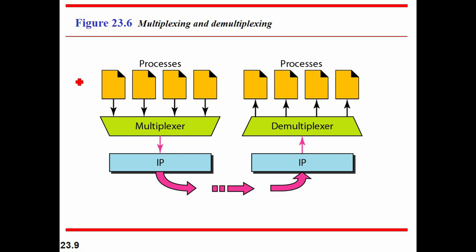Now, multiplexing and demultiplexing. Whenever you send some data, there will be some multiplexing or demultiplexing at the transport layer. At the sending side, there are many processes running which need to send packets. However, since there is only one transport layer protocol at a time, there is a many-to-one relationship, and you need to use a multiplexer. This protocol accepts messages from different processes with different port numbers, adds a header, and the transport layer passes the packet to the network layer. At the receiving side, all these packets have their headers read, they are demultiplexed, and correspondingly passed on to the destination process.